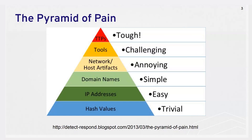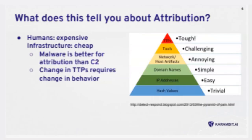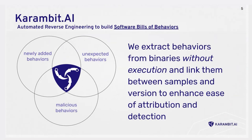If attackers have to change their TTPs, they need to change humans — change training, have a human rebuild something, write new pieces of malware. What we do at Karambit AI is build what we call a 'software bill of behaviors.' We can extract behaviors from binaries without actually executing them, and then link those behaviors between different samples. This really helps enhance ease of attribution and detection.